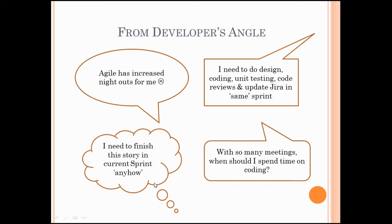Because of this thought process, a problem arises: team members might think, 'My scrum master is forcing me to finish this story, so let me finish it anyhow — even if that means taking shortcuts.' That means skipping unit testing, skipping code reviews, skipping basic design practices, just to get the story done and push it to the testing team — letting them figure out the defects instead. They just want to get it off their plate because they don't have enough time.